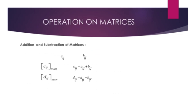Operations on Matrices — Addition and Subtraction: For m by n matrices A = [A_ij] and B = [B_ij], A plus B equals C where C_ij = A_ij + B_ij. A minus B equals D where D_ij = A_ij − B_ij.